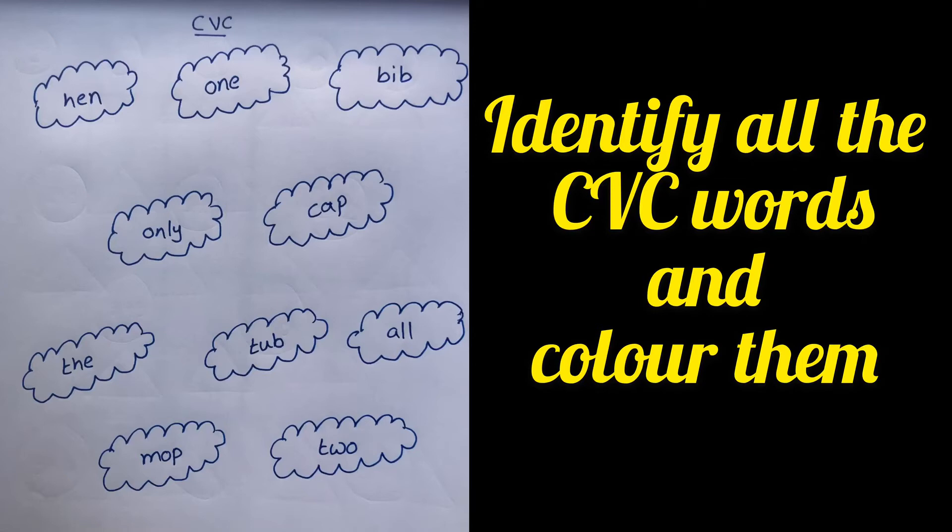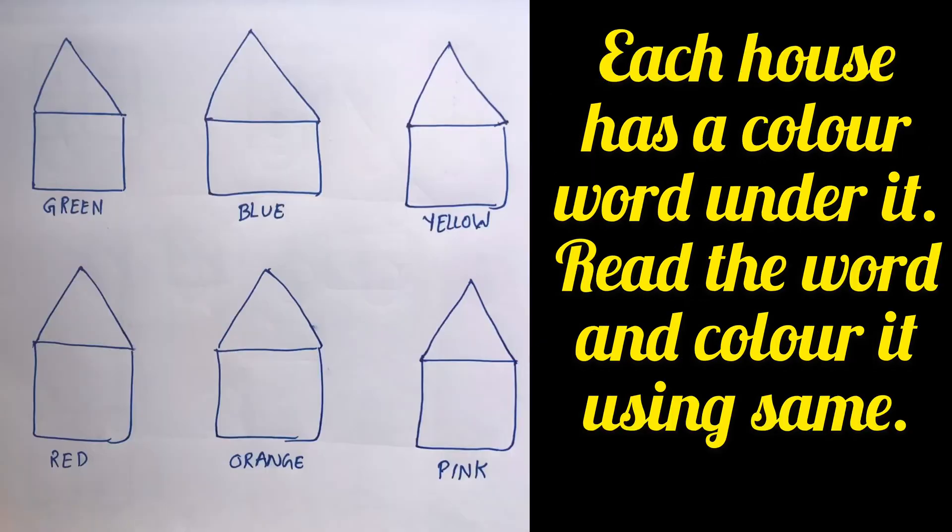So basically he'll be coloring all the CVC words and not color other words. And coming to this worksheet, there are some houses with color word below it. So the kid needs to read out the color word and he needs to color the house using the same color.